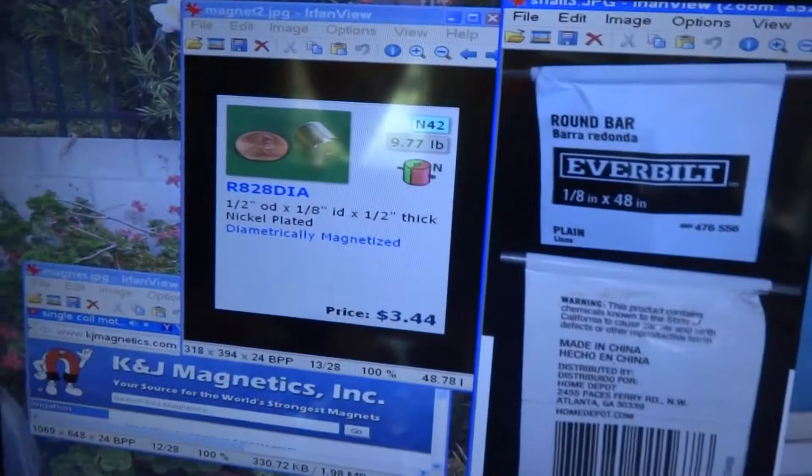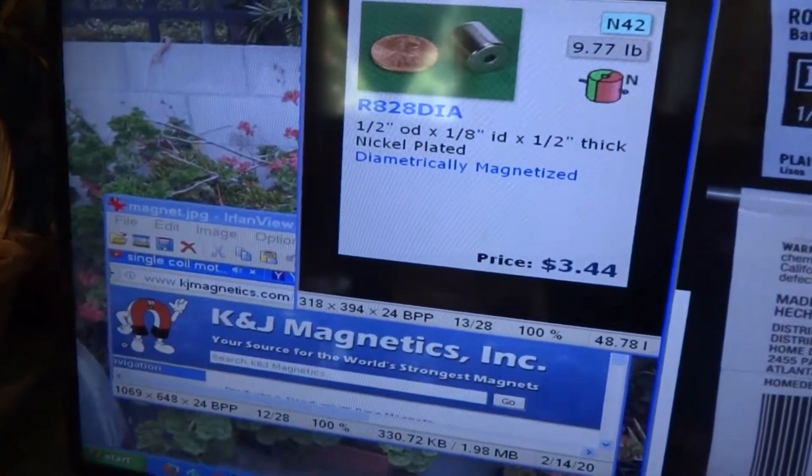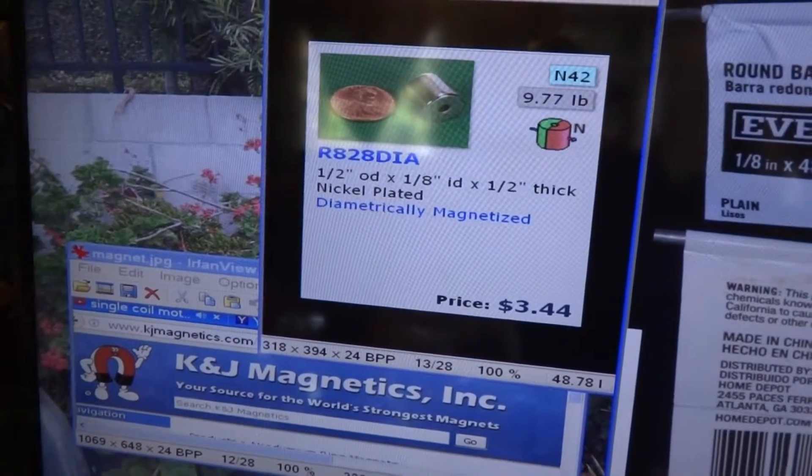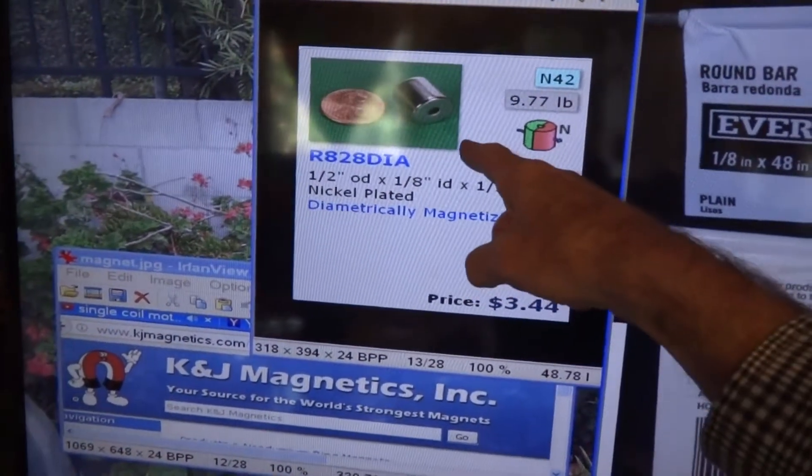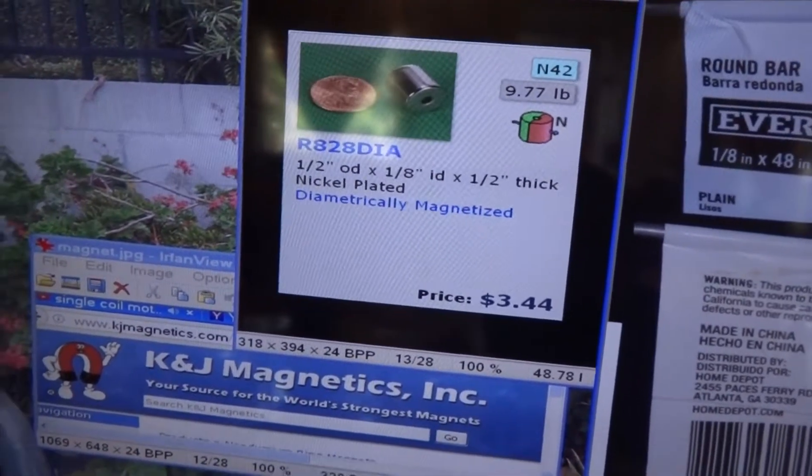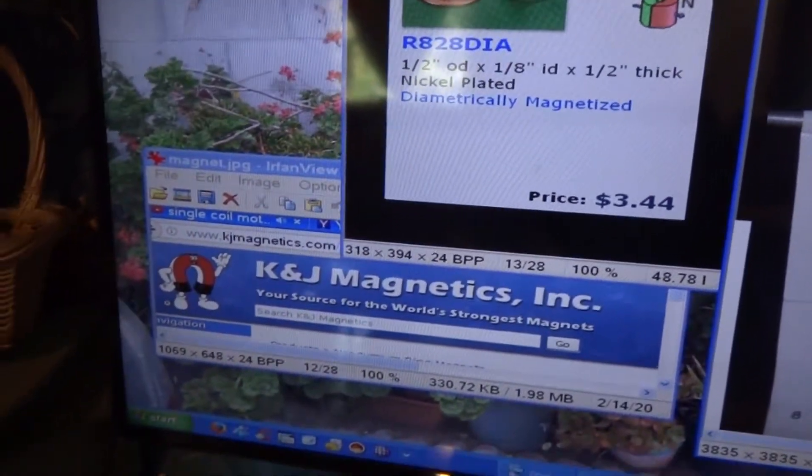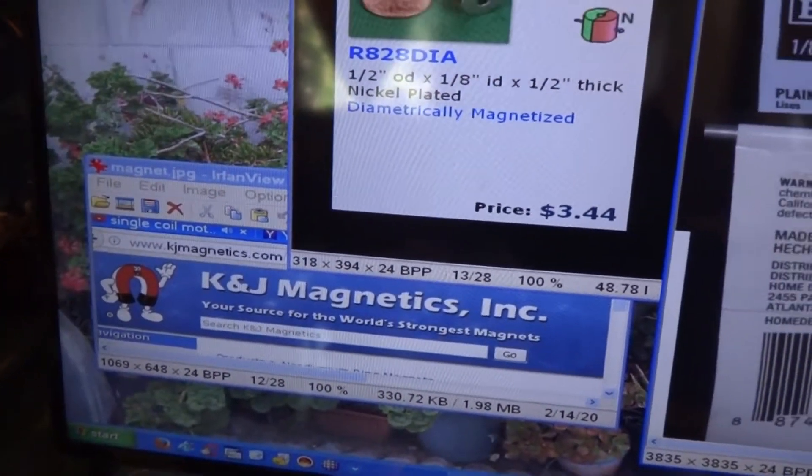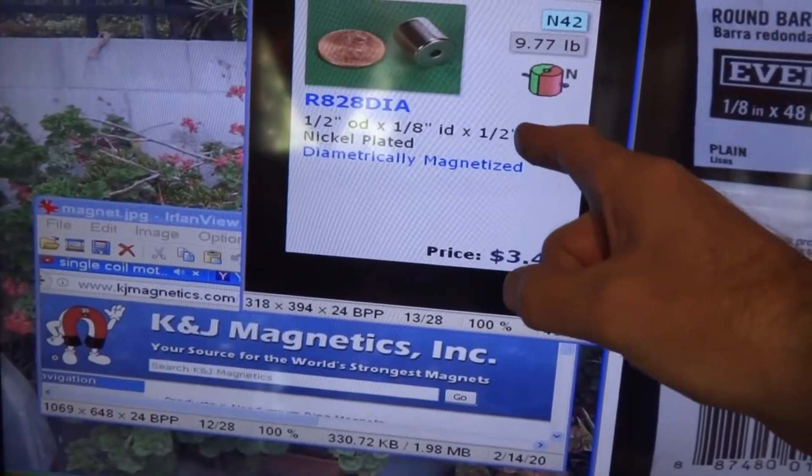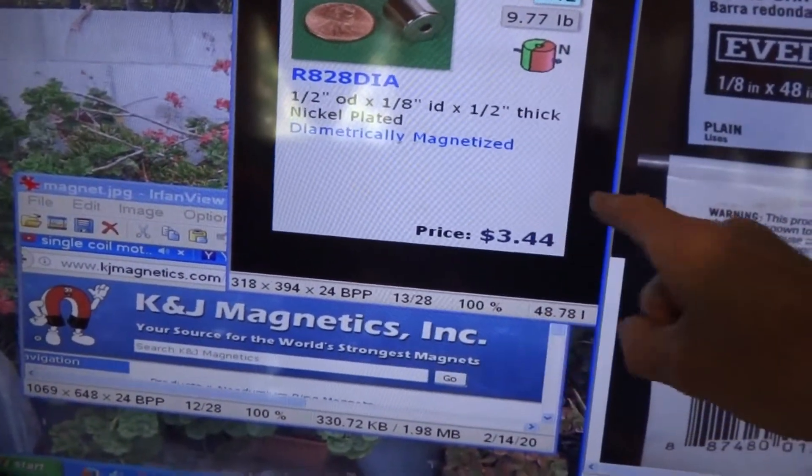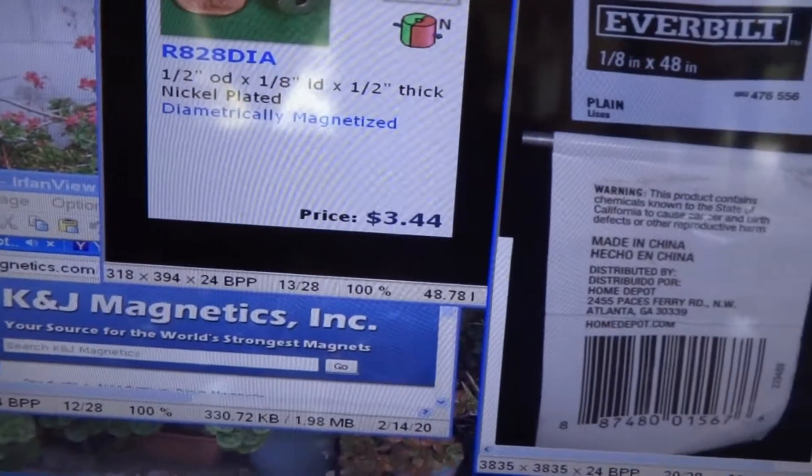Things that we're going to need though, one thing you will have to order online is this diametrically magnetized ring magnet here. Half inch size works real good. That's the one we're going to be using today. It's from K&J Magnetics Incorporated. A lot of people out there sell these ring magnets. Very few sell them diametrically magnetized. That's what you need.